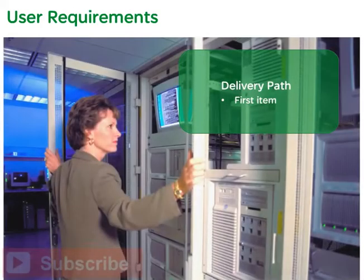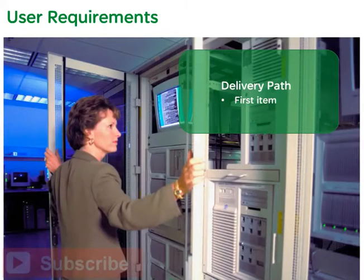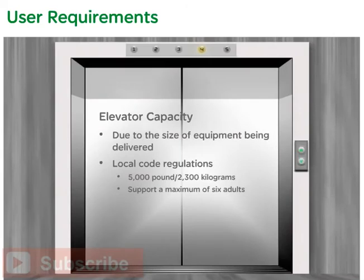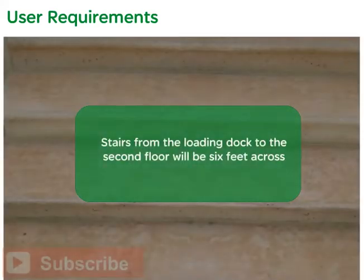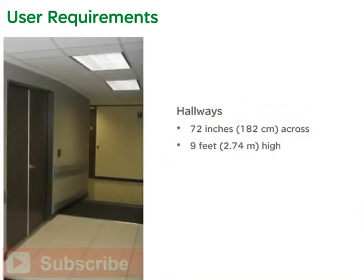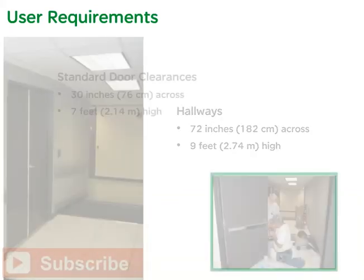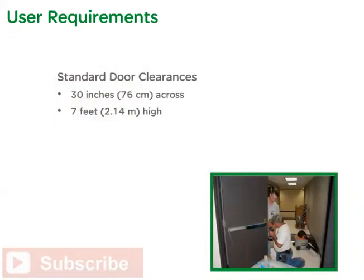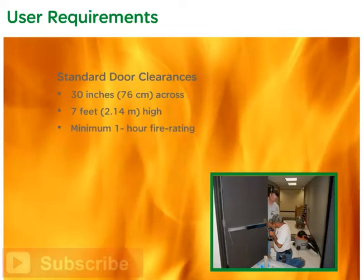The first areas addressed included the delivery path from the loading dock to the five wiring closets and structural elements such as doors and walls. Kelly and Crawford concluded that the elevator would have a 5,000-pound capacity and support a maximum of six adults. Stairs from the loading dock to the wiring closets on the second floor would need to be a minimum of six feet across. Hallways would be designed at 72 inches across and nine feet high, with standard door clearances of 30 inches across and seven feet high. Wiring closet doors would have a minimum one-hour fire rating, and perimeter walls would comply with fire code, insurance company, and lease requirements.